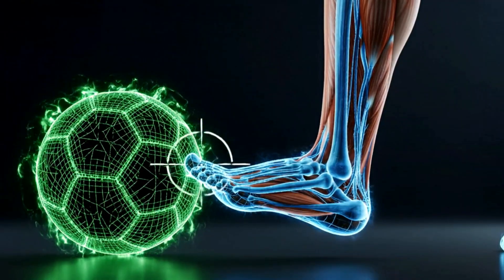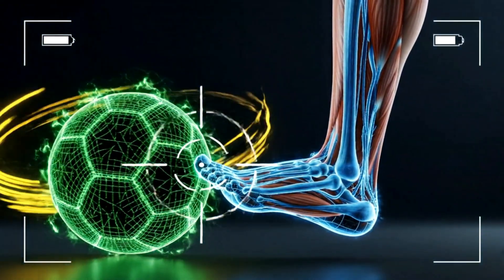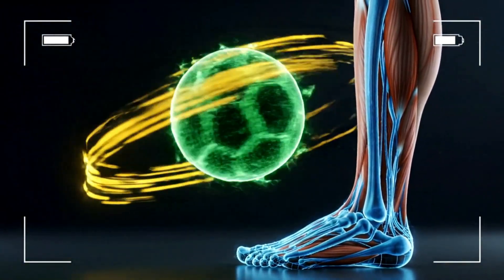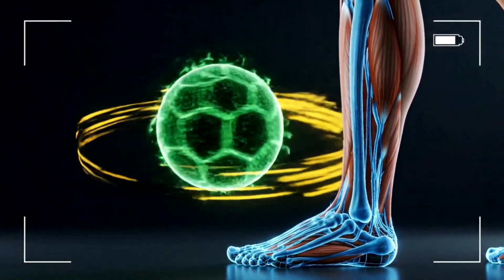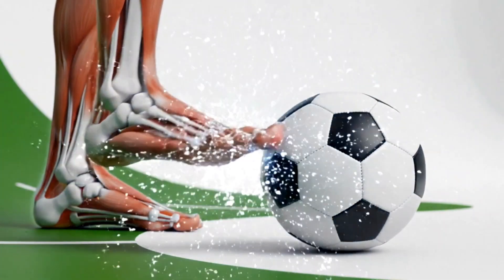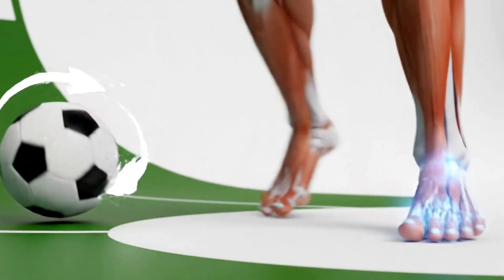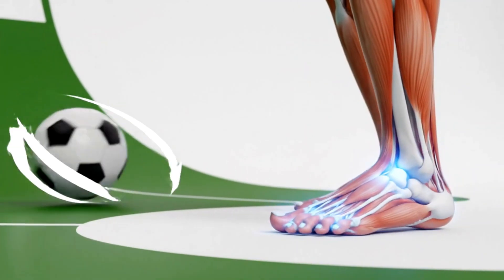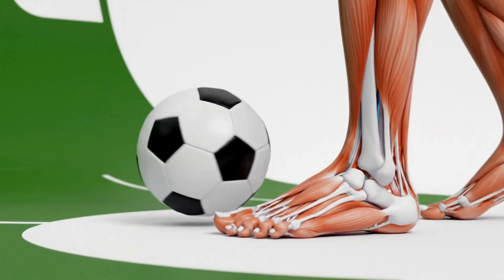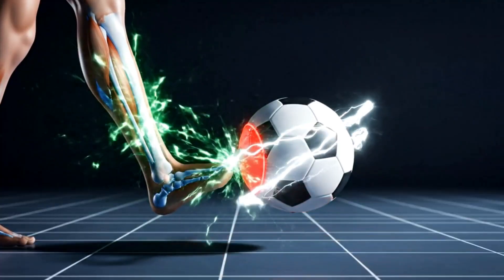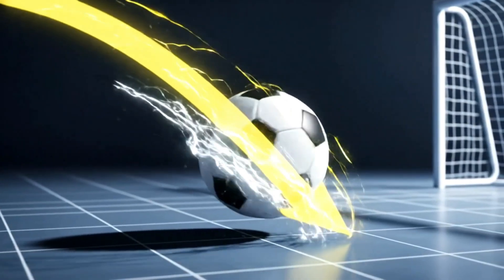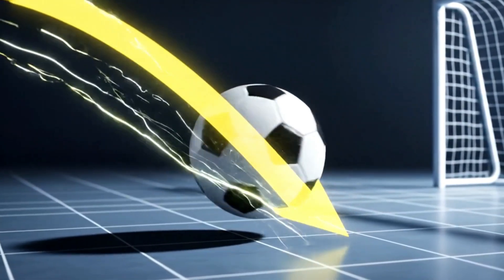Professional players train rigorously to master the precise point of contact needed to generate maximum controlled spin. This is often done using the instep of the foot, sweeping across the ball rather than hitting it head-on. If you hit the ball slightly below center, you get topspin, causing it to dip dramatically toward the goal.